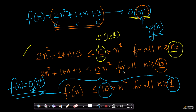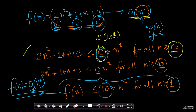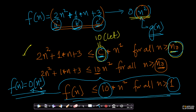This implies that f of n is order of n square — a very simple proof. The same proof you can do for different values of a-dash, b-dash, and c-dash. For any given values, you can find constants c and n0 such that the equation is always true, and hence f of n is always order of n square.